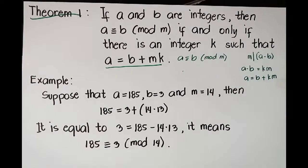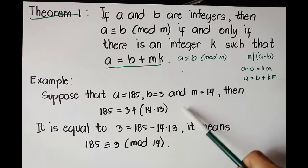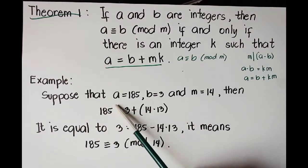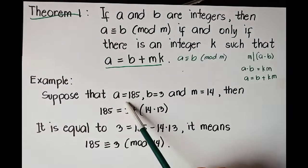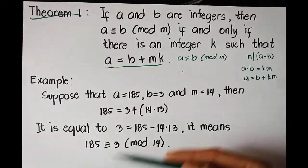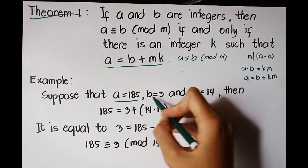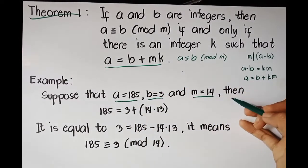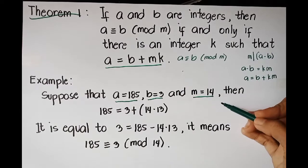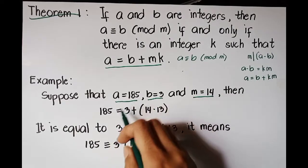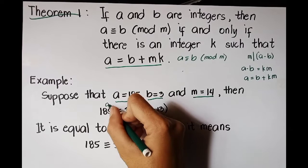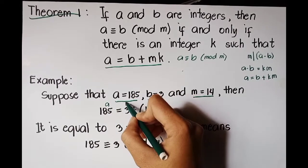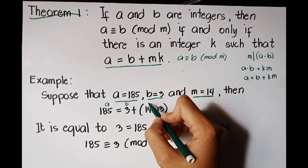Let's see the example to demonstrate Theorem 1. Suppose that a equals 185, b equals 3, and m equals 14. Then we have 185 as a, 3 as b, and 14 as m.